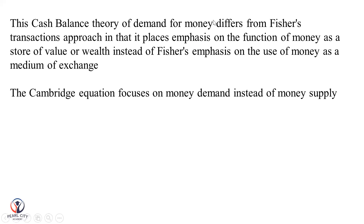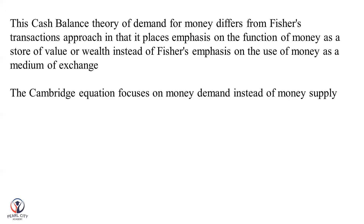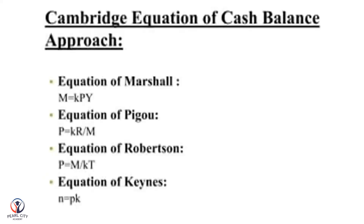The Cambridge economists and their formulas: Alfred Marshall — M = KPY; Arthur Cecil Pigou — P = KR divided by M; Robertson — P = M divided by KT; and Lord Keynes — N = PK. These formulas are important for match-the-following type questions in the Cambridge cash balance approach.